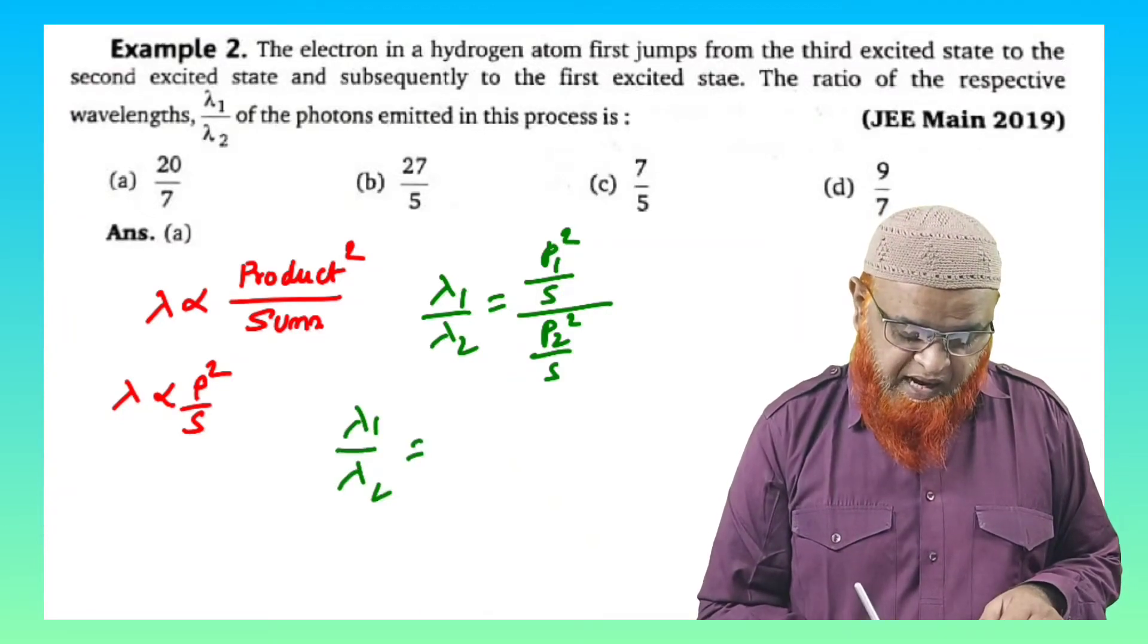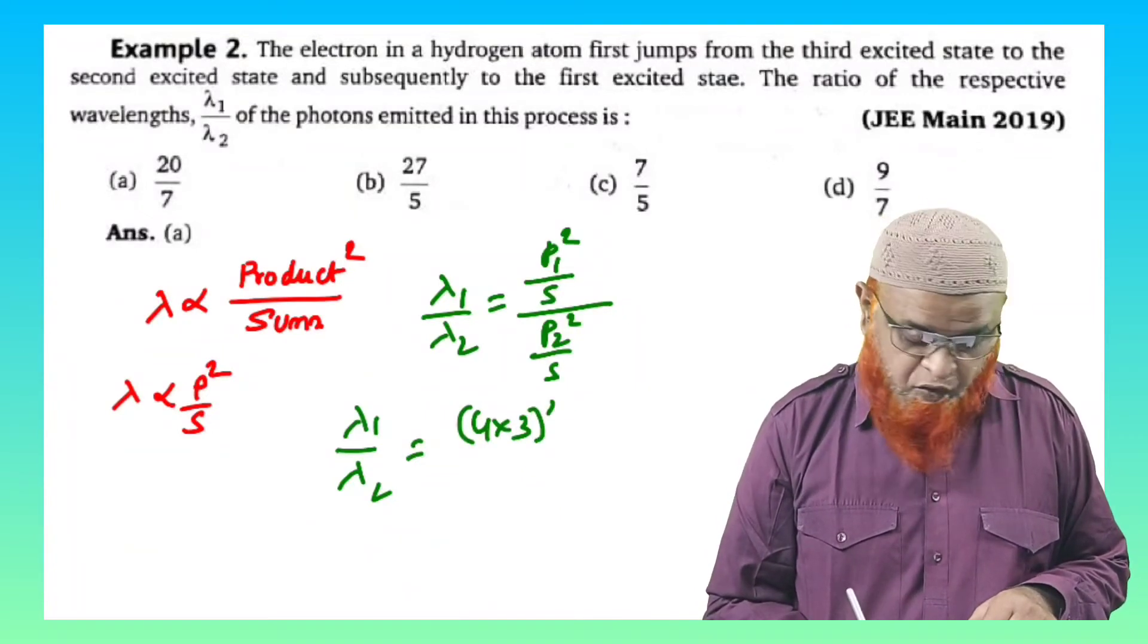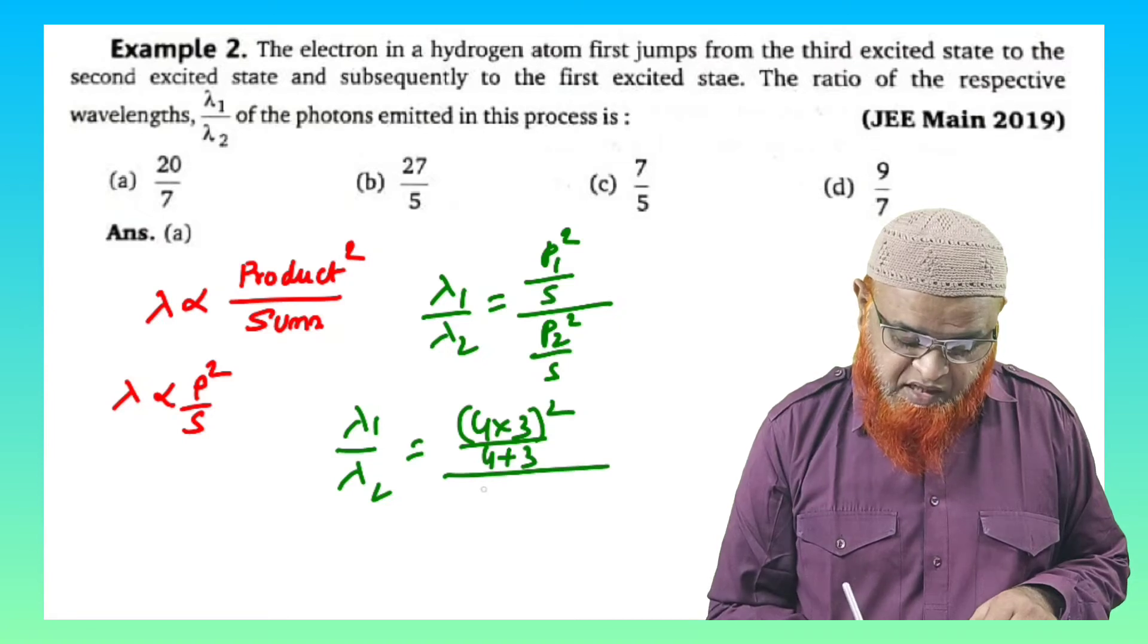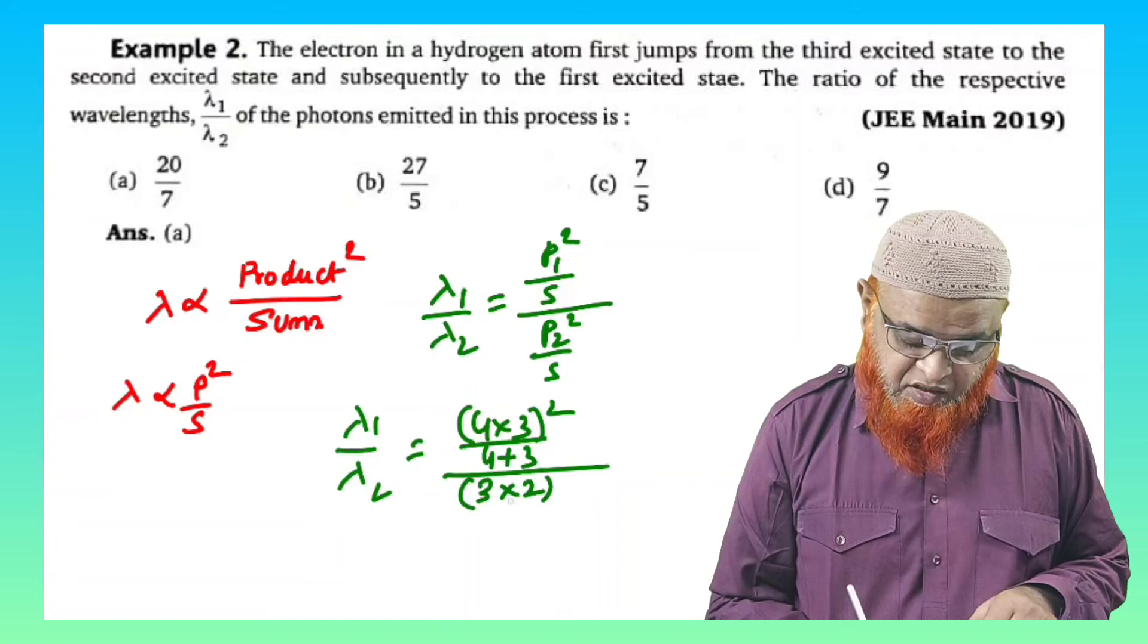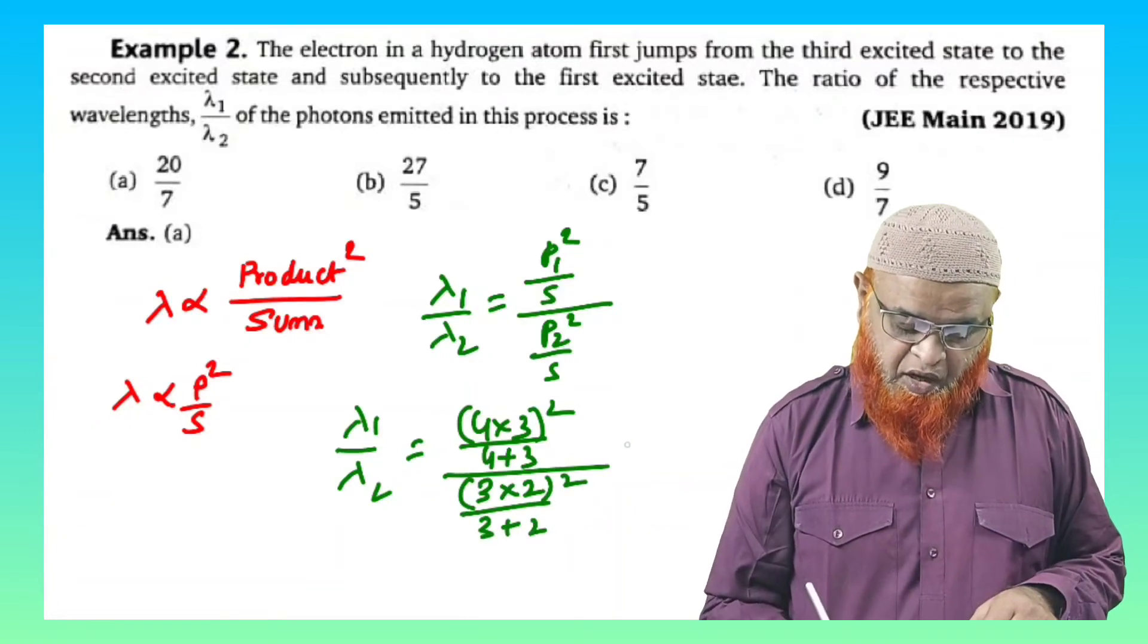So therefore lambda 1 by lambda 2, if you take product whole square, you will be getting 4 into 3 whole square divided by 4 plus 3, divided by the next thing, 3 into 2 whole square divided by 3 plus 2.